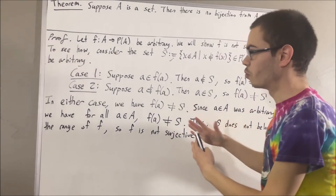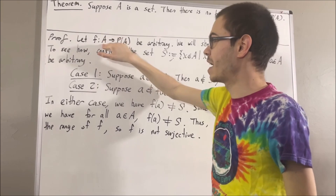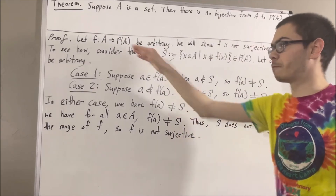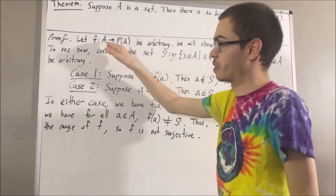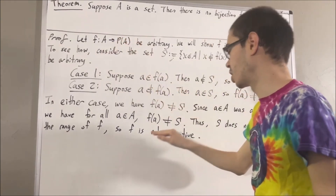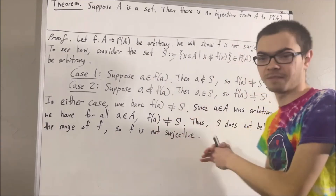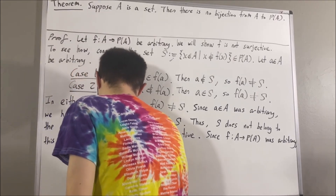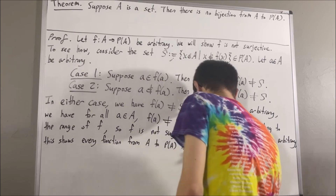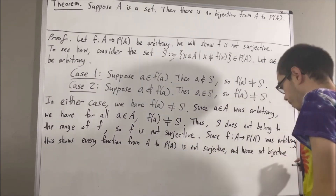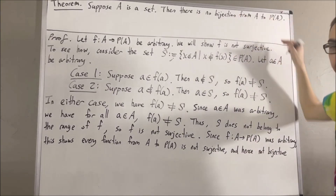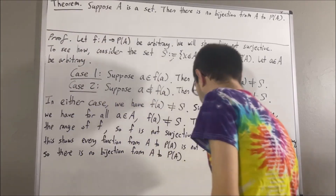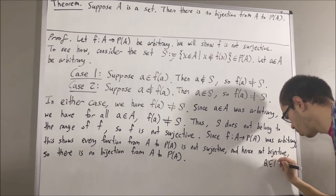Putting this all together, we have shown that given an arbitrary function F from A to the power set of A, it follows that F is not surjective. Since F was arbitrary, this means every function from A to the power set of A is not surjective, and therefore not bijective. So there is no bijection from A to the power set of A. This completes the proof.